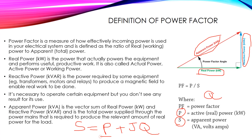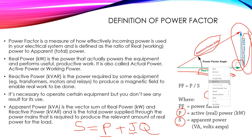The 'j' in jQ means a 90-degree angle, so the reactive power is 90 degrees from the real power. The real power is horizontal, the reactive power is 90 degrees from it — leading by 90 degrees — and the vector summation of these two gives us the apparent power supplied by our generator.